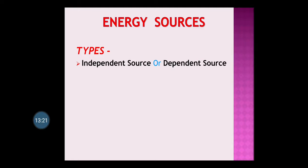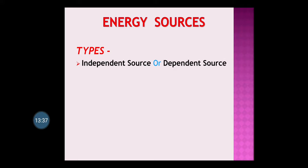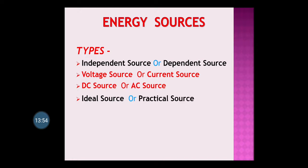Now we will study about energy sources. We have studied passive components and active components. For all these components, you need some energy source to make them work. Different types of energy sources are there. One classification is independent source or dependent source. Second classification is voltage source or current source. It can also be classified as DC source or AC source, or as ideal source or practical source.